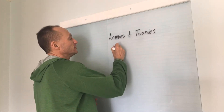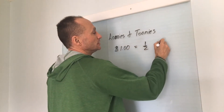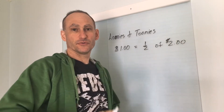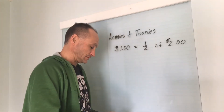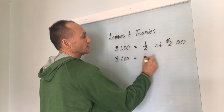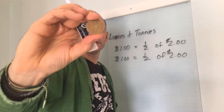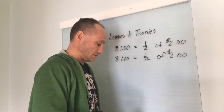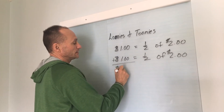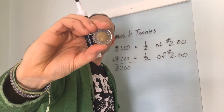So I have a loonie, which is a dollar, which is one half of two dollars. That is one loonie there. And I also have another loonie, which is another half of two dollars. When I have two loonies and I add them together, I get two dollars — which is the same as this: a toonie.